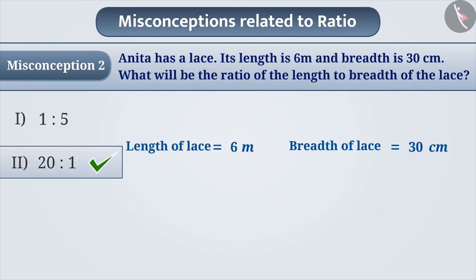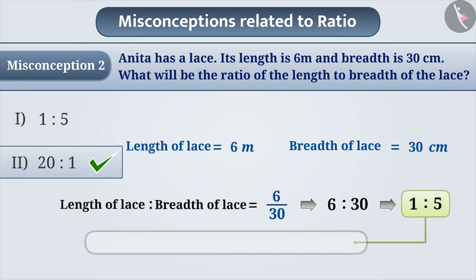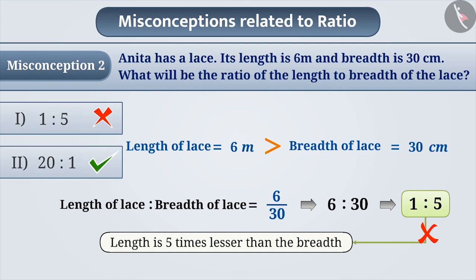Some students don't pay attention to the fact that their units should be the same. To find the ratio of length to breadth, they write 6 as the numerator and 30 as the denominator — the ratio of metre and centimetre. They further write it in its simplest form, i.e. 1 is to 5. This ratio shows that the length is 5 times smaller than the breadth. But if we observe carefully, 6 metre length is greater than 30 centimetre breadth. Therefore, writing the ratio of length to breadth as 1 is to 5 is incorrect. Thus, option 1 is incorrect and option 2 is the correct answer. To find the correct ratio, it is very important to keep the units equal.